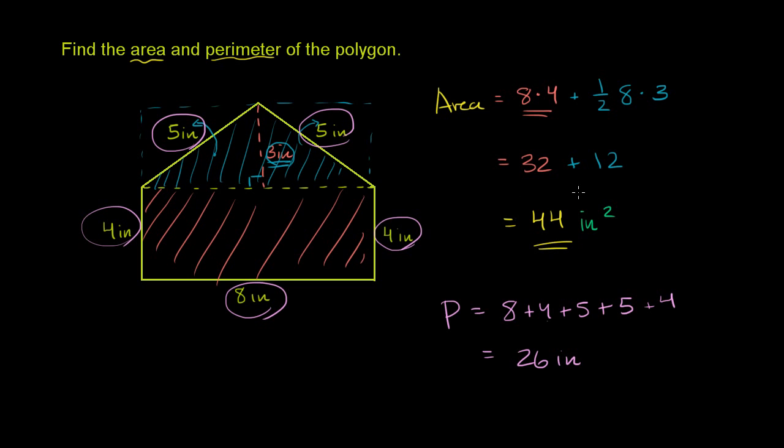And that makes sense because this is a two-dimensional measurement. It's measuring something in two-dimensional space. So you get a two-dimensional unit. This is a one-dimensional measurement. It's only asking you essentially how long would a string have to be to go around this thing. And so that's why you get one-dimensional units.